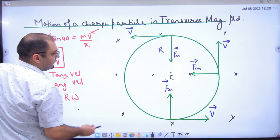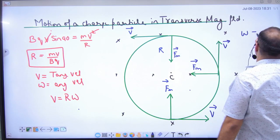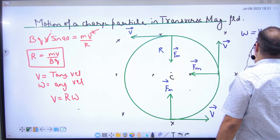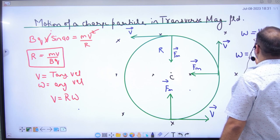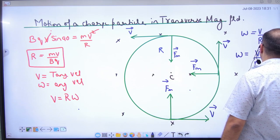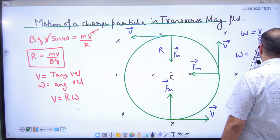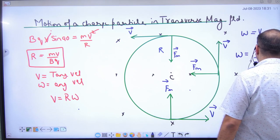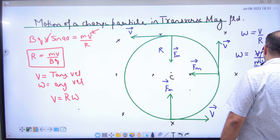So here, what will be omega value? V divided by R. So omega is equal to V divided by R. What is R value? MV divided by BQ. V from V cancel. What will be omega? BQ divided by M.